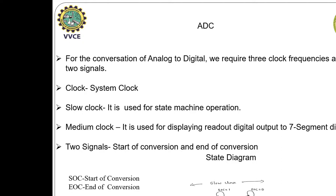To obtain the upper nibble and lower nibble of the digital output from the ADC, we need to AND with 1110 and then right shift by 4 bits in order to display on the 7-segment display. The slow clock is used for state machine operation, and the medium clock is used for reading and displaying the digital output.